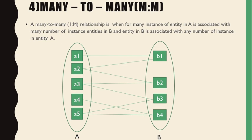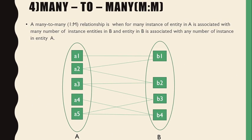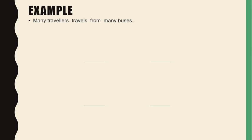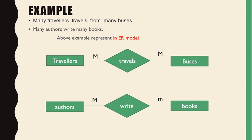The last type is many-to-many. In a many-to-many relationship, many instances of entity A are associated with many instances in entity B, and entity B is also associated with any number of instances in entity A. For example, many travelers travel in many buses, and many authors write many books. These are represented in ER models as many-to-many relationships.